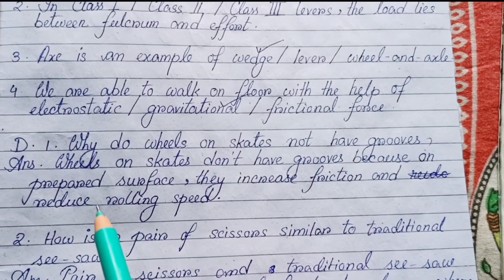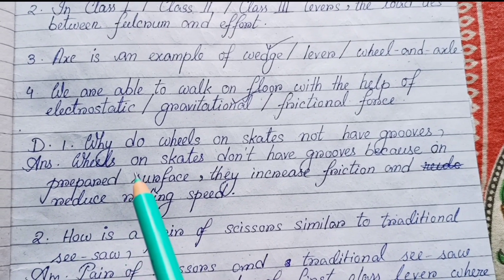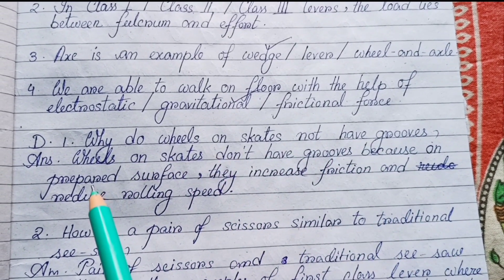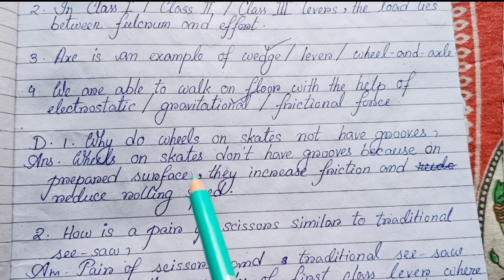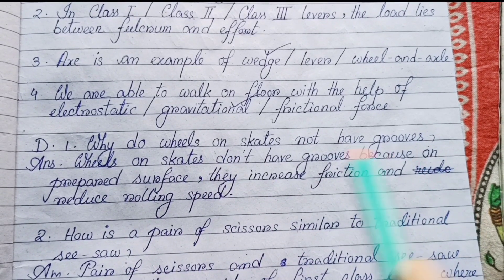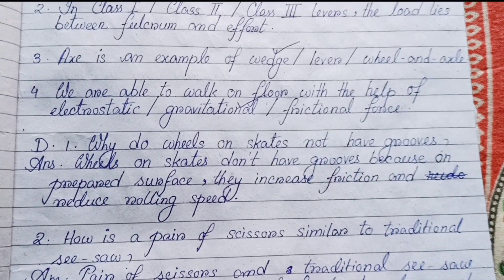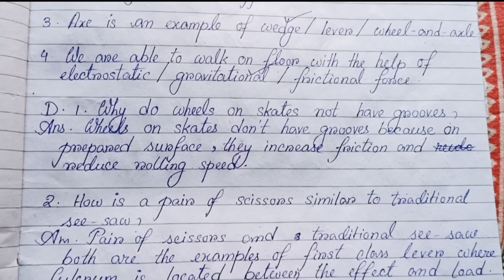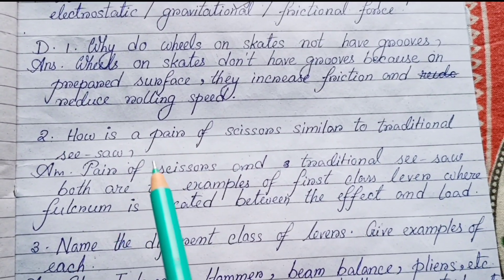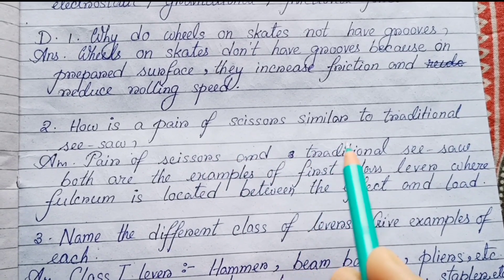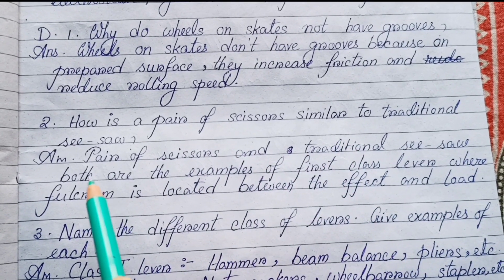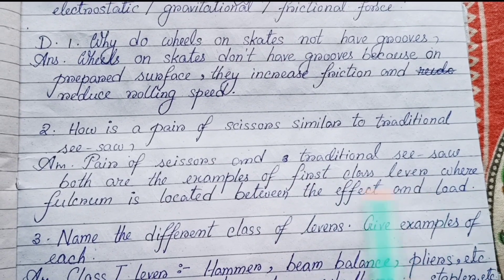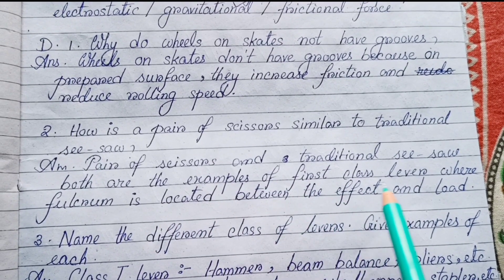Question answers from the chapter. Number one: Why do wheels on skates not have grooves? Wheels on skates don't have grooves because on a prepared surface they increase friction and reduce rolling speed. Number two: How is a pair of scissors similar to a traditional seesaw? A pair of scissors and a traditional seesaw are both examples of a first class lever.